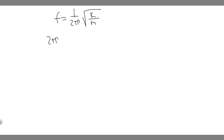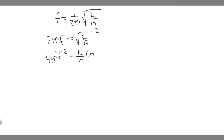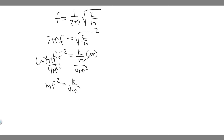We want to get f and m on the same side. Multiply both sides by 2 pi to get 2πf = √(k/m). Square both sides: 4π²f² = k/m. Multiply both sides by m, then divide both sides by 4π², and you get m times f squared equals k over 4π squared. Notice the right side is just a constant — it won't change between the initial and final scenarios.